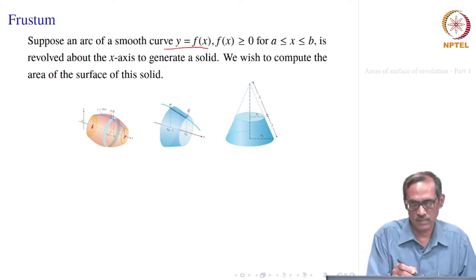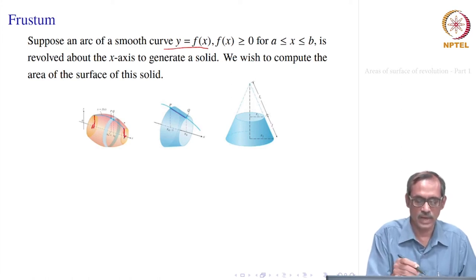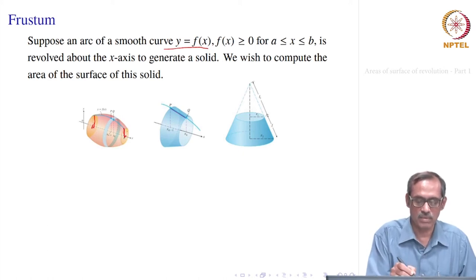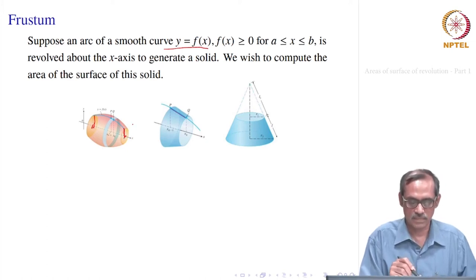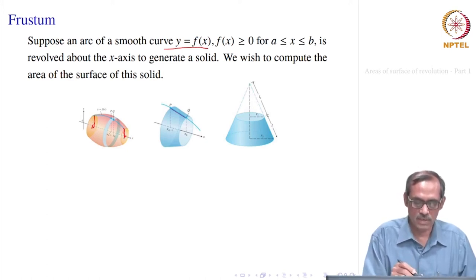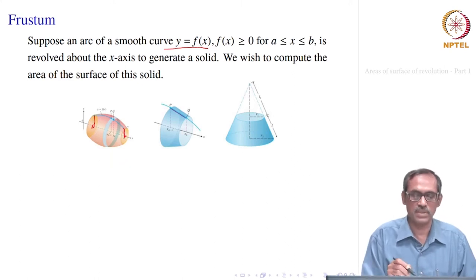You get a solid — not really a full solid, it is a hollow one. Even if you take this region and revolve around the x axis you would get the solid, but we are interested only in the surface. So we just take that the curve is revolved around the x axis. This hollow solid has a surface, and we want to compute the area of this surface.